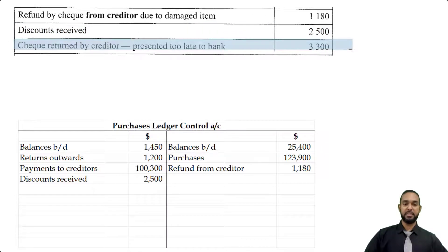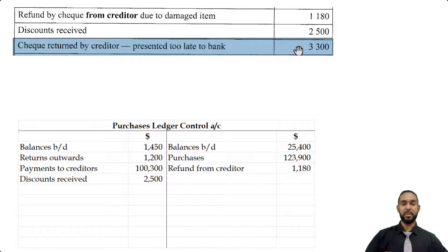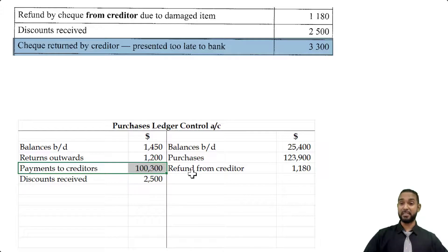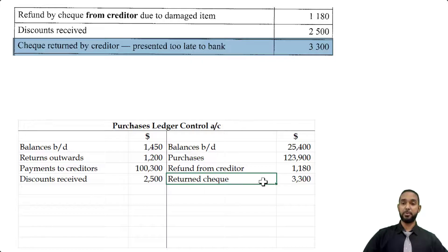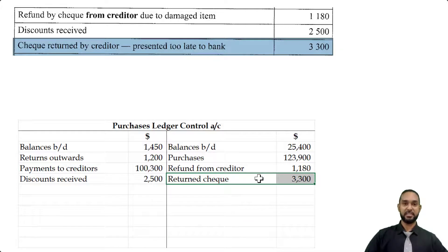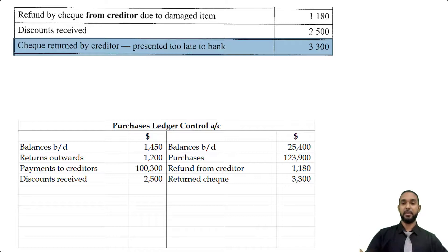I'm seeing check returned by creditor presented too late to bank, 3,300. We gave the creditor a check but they presented it late and the bank said the check had stale dated — checks are only valid for six months, in some cases twelve. The creditor has to give us back the check. Remember when we paid our creditors we debited the account; if they give us back the money we have to go on the opposite side — the credit side — to record the returned check. The liability didn't actually go down since they didn't cash it, so the original debit must be counterbalanced by a corresponding credit.